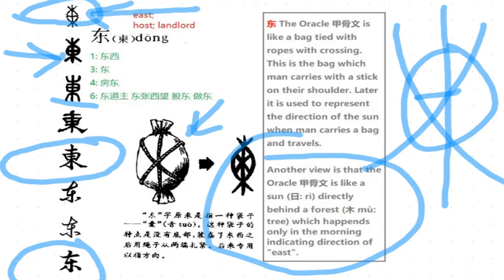So that is another explanation. The problem is we don't know which one is correct. The fact is that Chinese discovered all this oracle bone script about 100 or 200 years ago from some antiques, and there was no documentation about how characters were really created from oracle images. So scholars of Chinese just have to guess.